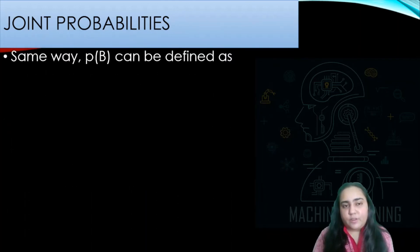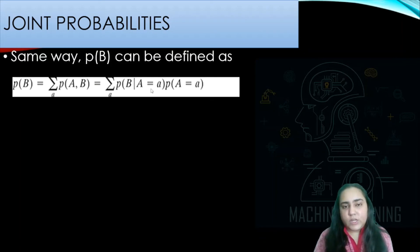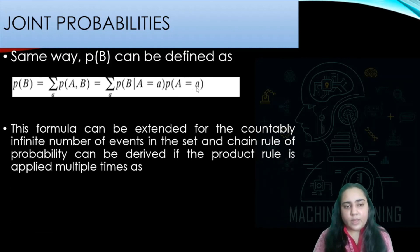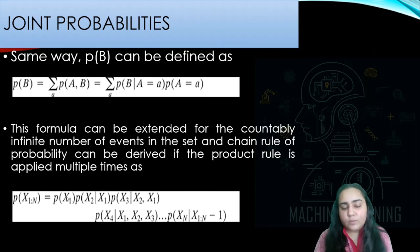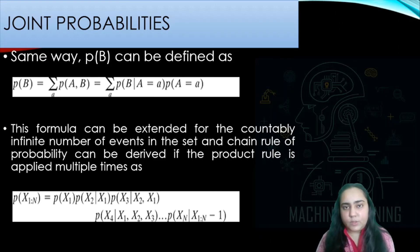Similarly, you can write P(B) in the same manner by swapping A and B. This formula can be extended for a countably infinite number of events, and the chain rule of probability can be derived by applying the product rule multiple times. With N events, you can apply the chain rule finding: P(X1) × P(X2 | X1) × P(X3 | X2, X1) and so on until you reach N events. I hope you understood all this, and I'll be back with the next video. Thank you for watching.